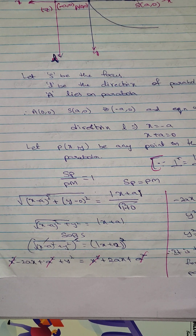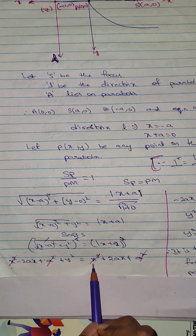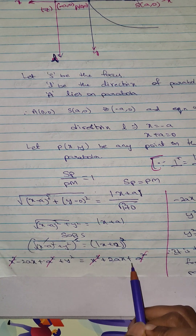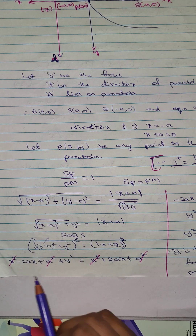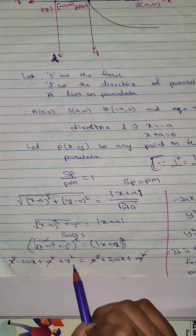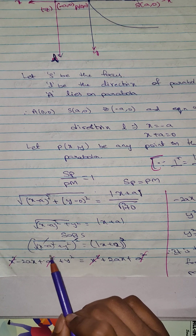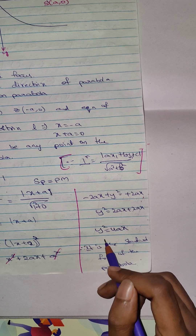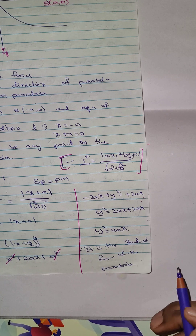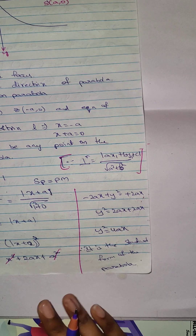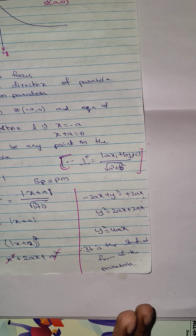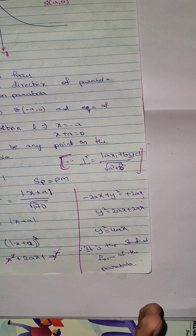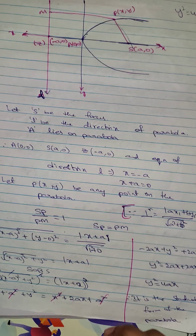Squaring on both sides, the squared terms cancel. We get: x² minus 2x plus y² equals to x² plus 2x, which simplifies to y² equals to 4x. This completes the proof. This parabola concept can be explored further.